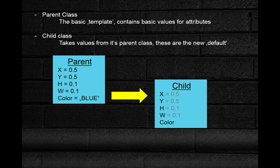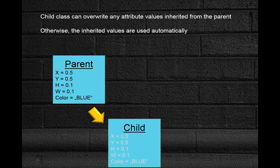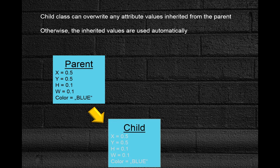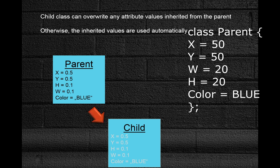Before we do that, let me show you how this works on a simpler example. We have a class called parent. It has a couple of basic attributes: some x and y coordinates, width and height, and color. This will be our parent class. I usually define as many attributes as possible here and set them to default values. So in this case x equals 50, y as well, width and height will both be 20, and color will be blue.